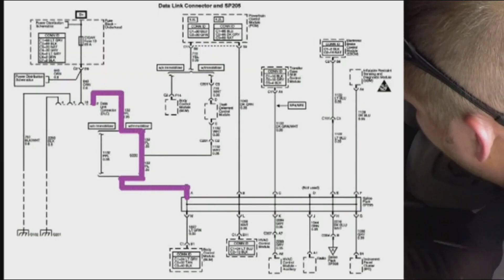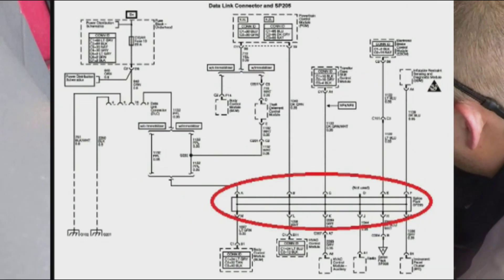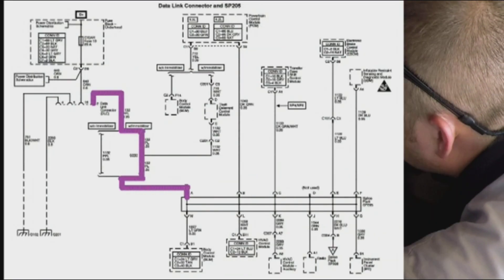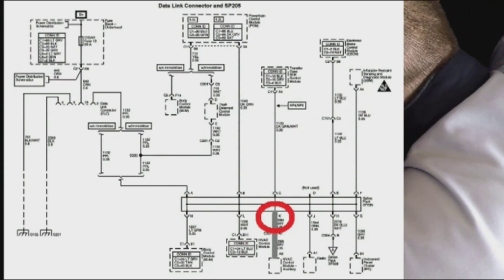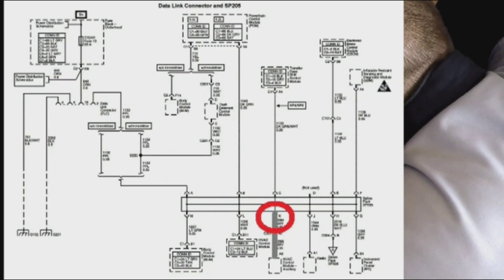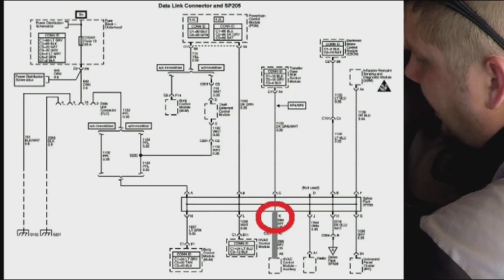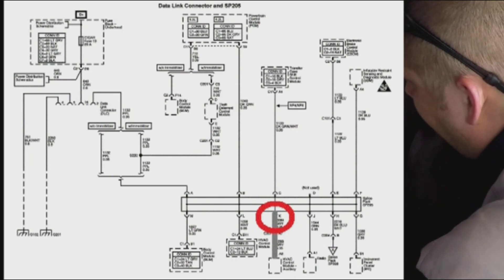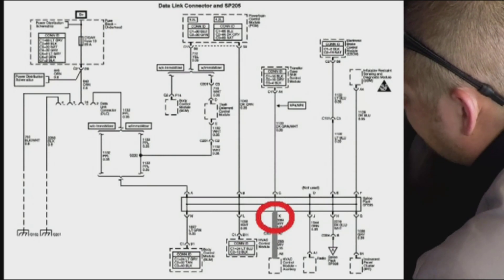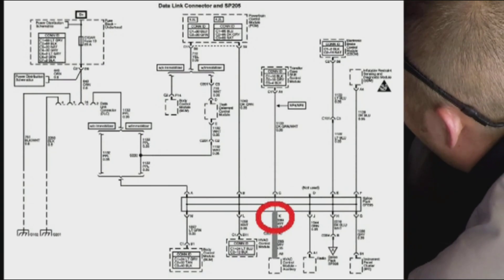I outlined the purple wire that goes from the DLC to the network connector, or comb, and the comb is circled in red. On the comb, there's a gray wire in position K — exactly what I had — and that's labeled as the auxiliary HVAC control module. Not the primary front unit, but the auxiliary — this is an LT trim vehicle, so it has rear AC with its own control module and control head.